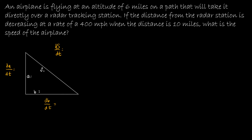Now let's read the question. An airplane is flying at an altitude of six miles — so that's how high the plane is. Here's my plane. The altitude is six miles. They're not giving me dA/dt, but we know it's flying at a constant altitude — it's going straight ahead — so dA/dt is going to be zero because the altitude isn't going to change.